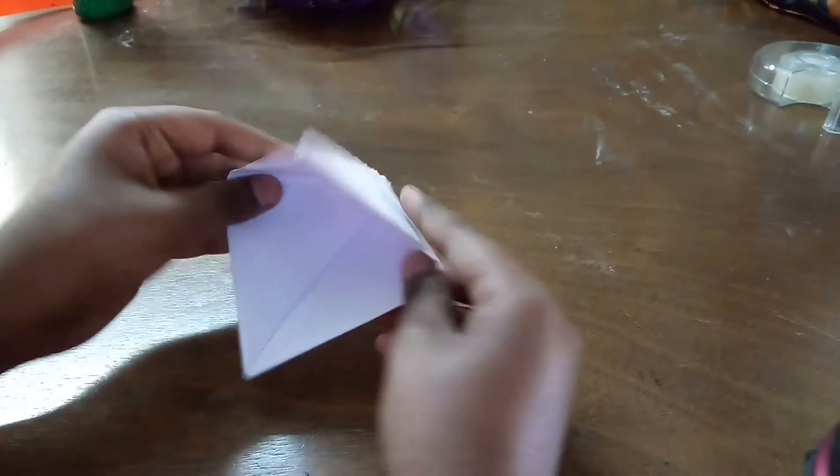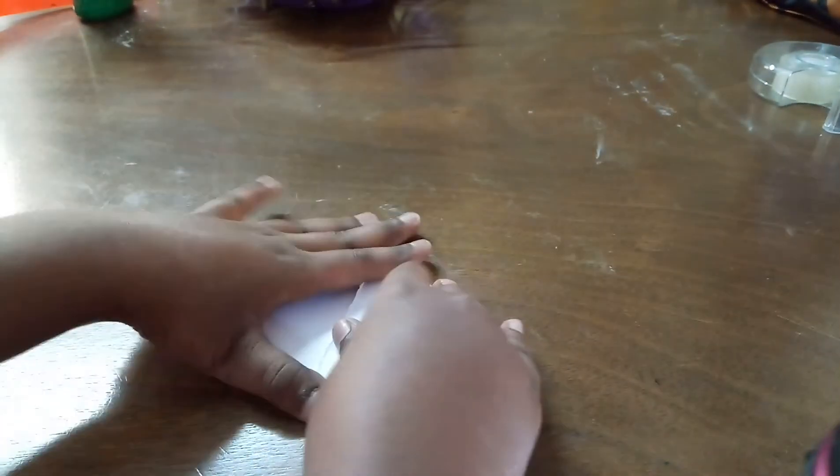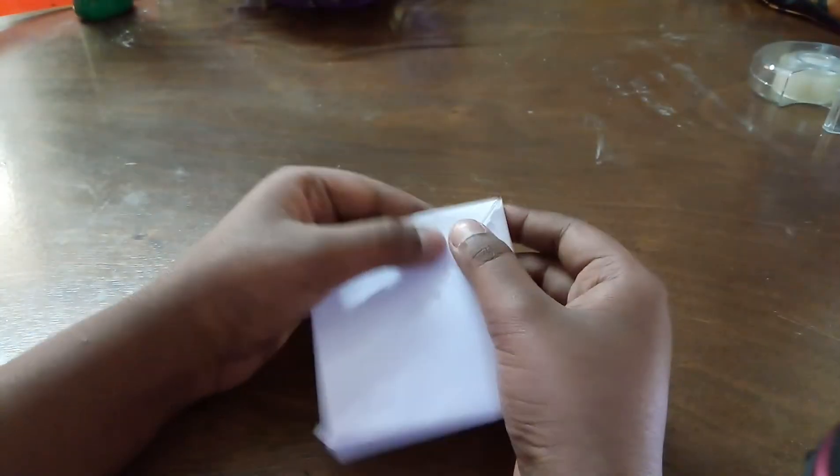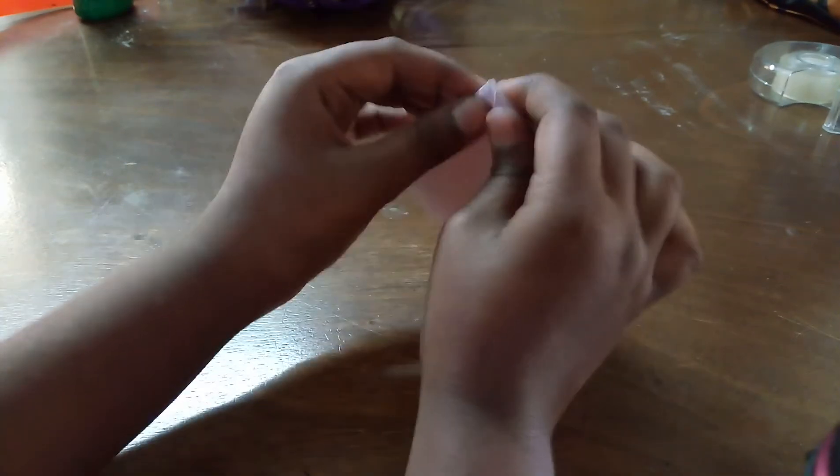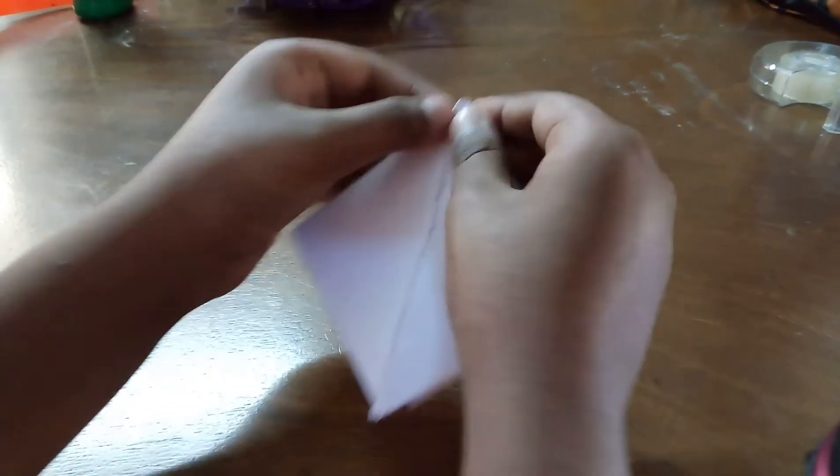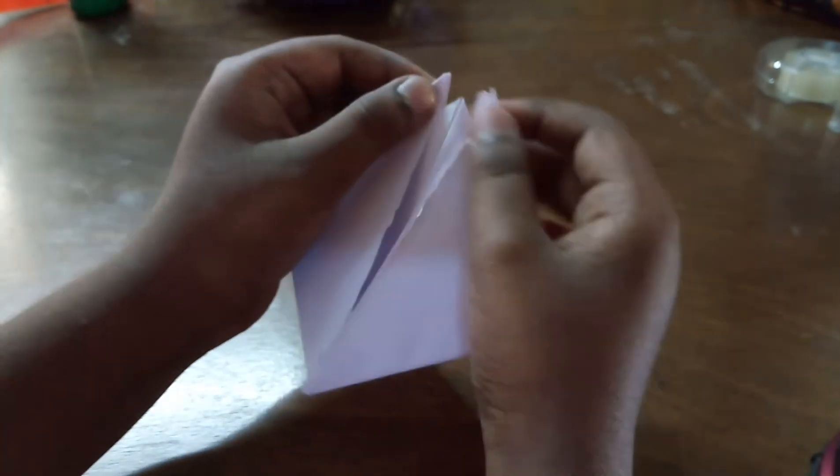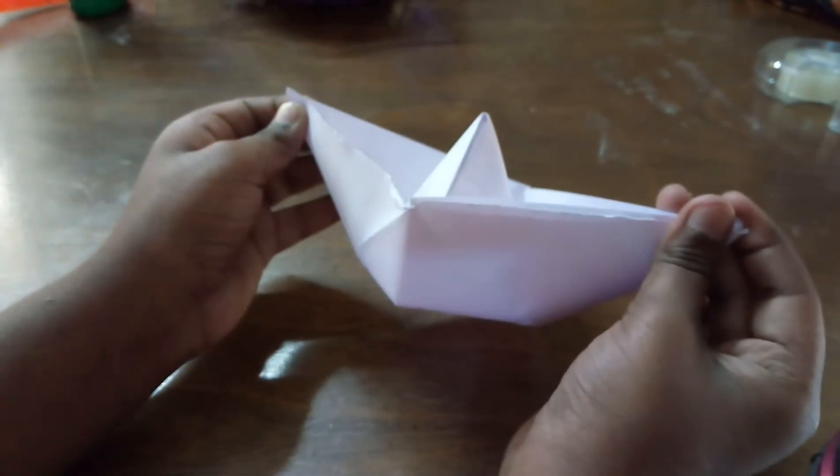From here, pull it and crease it. This is going to become a diamond shape. Now it is going to be just like a flower. You just have to take these two parts and pull it out. It is going to come out like a flower. And there you go.